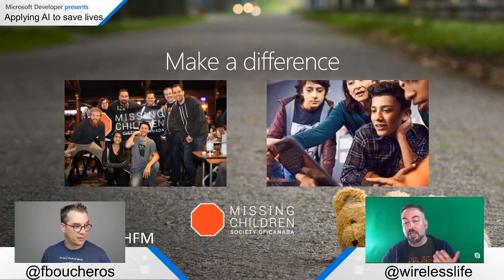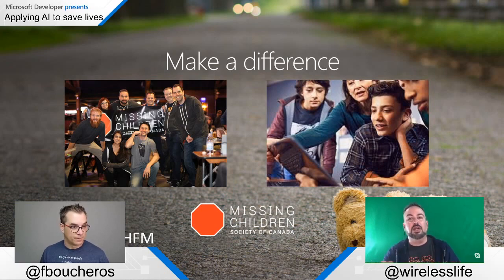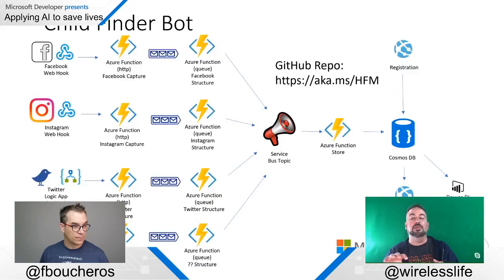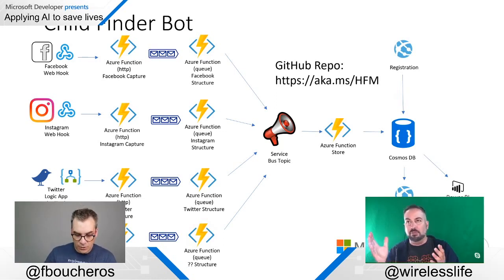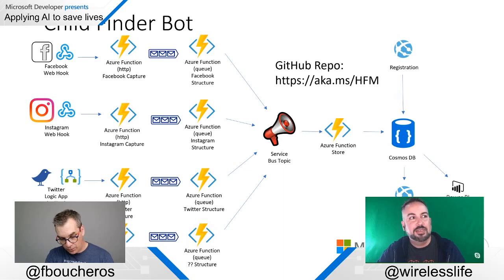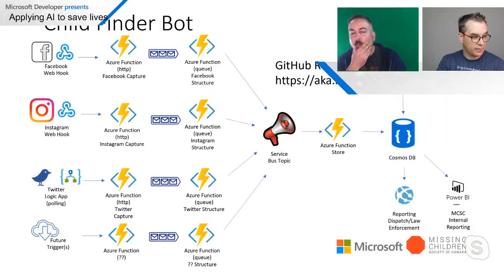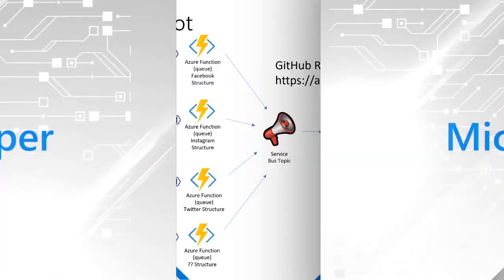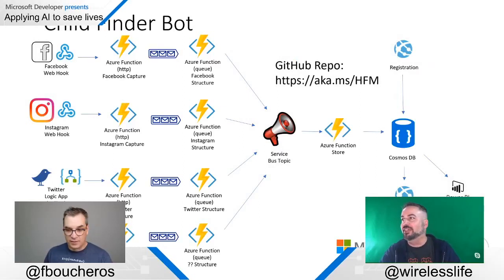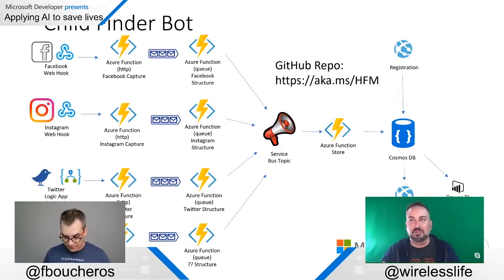We responded: what if we automated the process to build that dossier in a couple of hours instead of 30 days? They said 'could you do that?' — of course. That's a big game changer in finding kids. The GitHub repo for this is aka.ms/hfm — HFM stands for 'Help Find Me,' the moniker for the solution. It was called the Child Finder Bot.